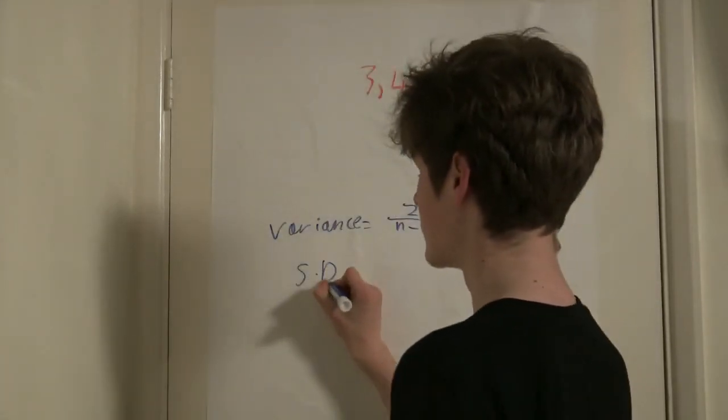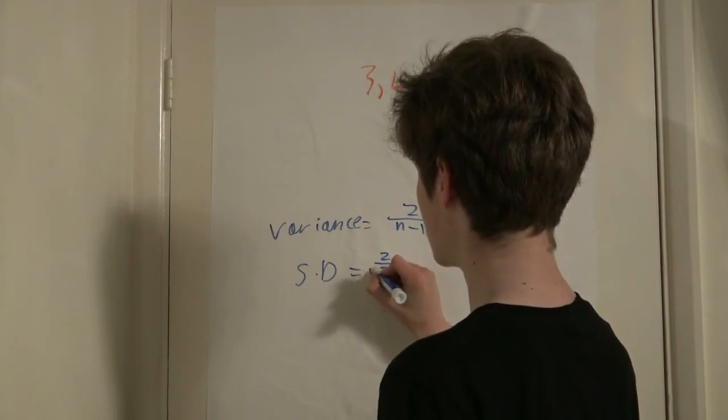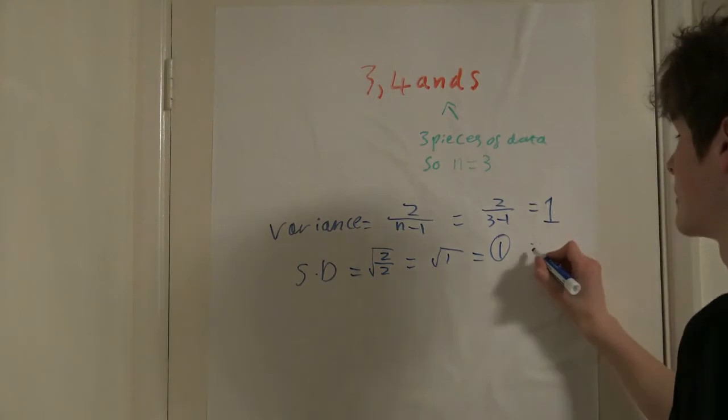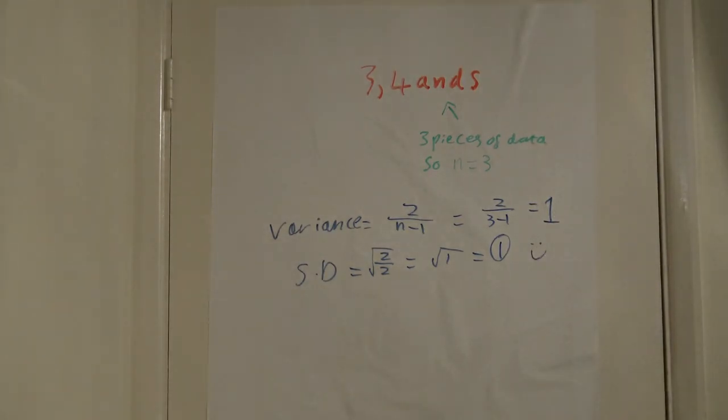So in this very simple example, 1 is the variance. To find the standard deviation, we square root 1, and the square root of 1 is 1. And that is our answer.